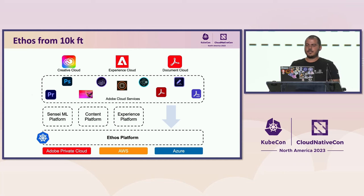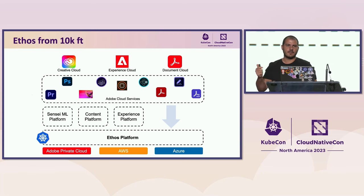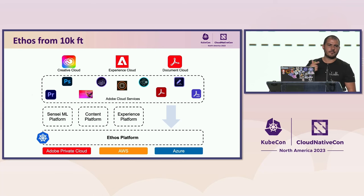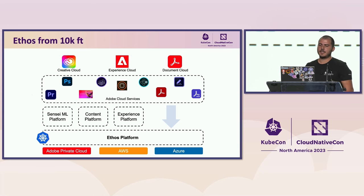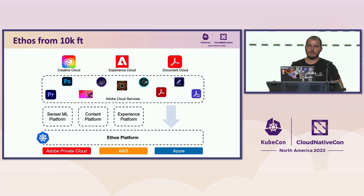This is the Ethos Kubernetes platform from 10,000 feet. On the top of the slide, we have the three main Adobe Clouds: Creative Cloud, Experience Cloud, and Document Cloud. These clouds are powered by Adobe software products such as Adobe Photoshop, Adobe Firefly, Adobe Analytics, Adobe Experience Manager, and Adobe Sign. Together with platforms such as Sensei Machine Learning, Content Platform, and Experience Platform, all together are running on top of Ethos — which is basically the Adobe runtime for containerized applications.